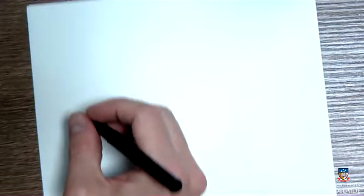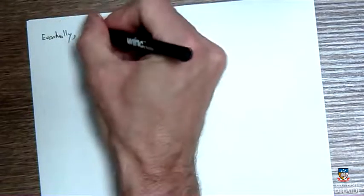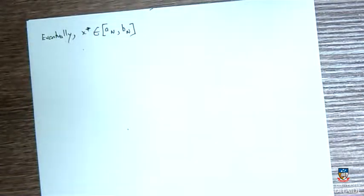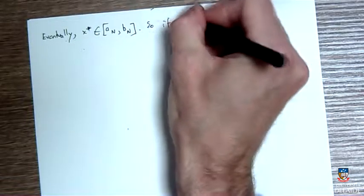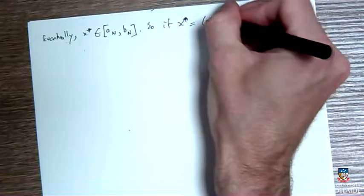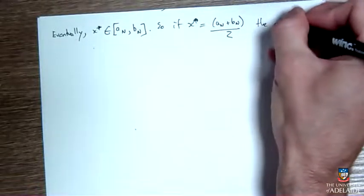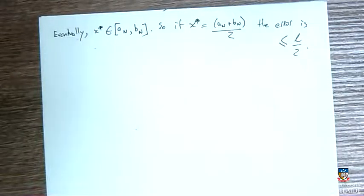Let's write out what the error in this algorithm is. Eventually, x* is going to lie in the interval aₙ to bₙ after n intervals. If I assume, at worst, if x is in the middle of that interval, (aₙ + bₙ)/2, if it's in the middle, the error is going to be less than or equal to l/2. So that's something I can say straight away.